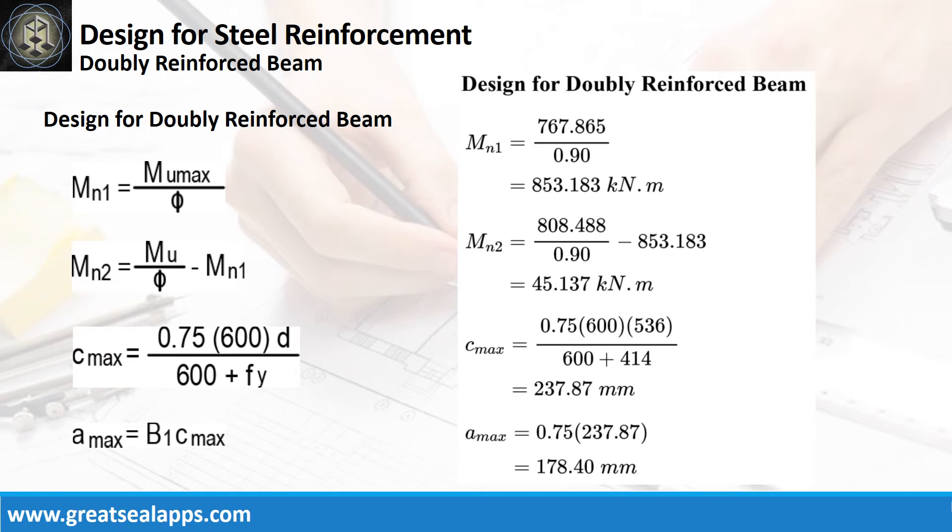Given maximum moment equals 808.488 kN-m, MU max equals 767.865 kN-m, and D equals 536 millimeters. The nominal moment of stress block MN1 equals 853.183 kN-m, and the excess nominal moment MN2 equals 45.137 kN-m, for a neutral axis, C max equals 237.87 millimeters, and A max equals 178.4 millimeters.